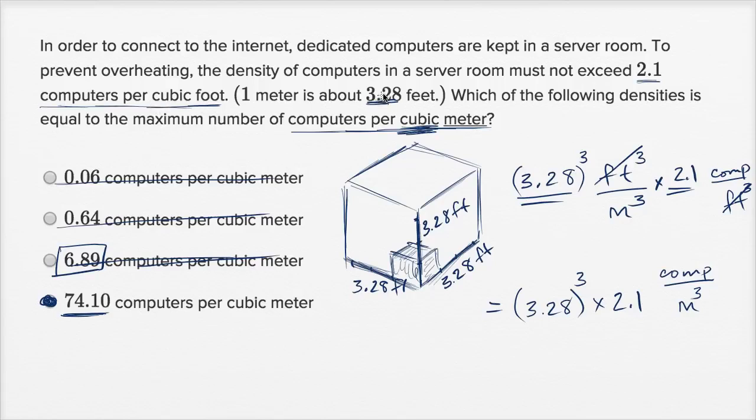and then if you just say, well, I have 3.28 as many feet per meter, not thinking in terms of cubic feet and cubic meters, then if you take 2.1 times 3.28, that's probably this choice here. I haven't multiplied it out, but that looks like 6.89. So that's where this answer actually came from.